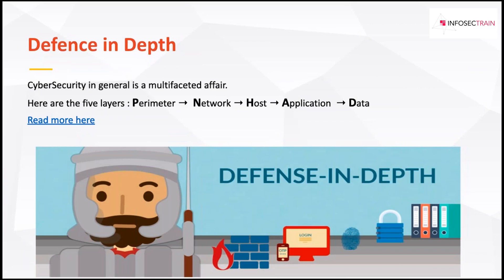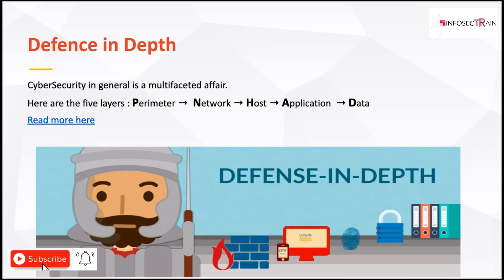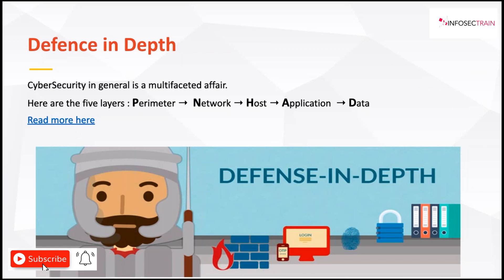Let's understand defense in depth through an example — a kingdom. Imagine there's a kingdom ruled by a king, with adversaries who want to take over and do malicious activities. It's the king's moral duty to protect his people, and to do that he has to set up a defense in depth. The first question is: what would be the first level of defense the king needs to set up? Of course, he has to secure the perimeter — the outermost boundary of the kingdom.